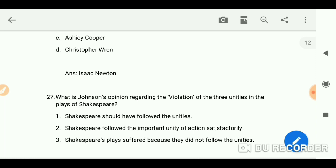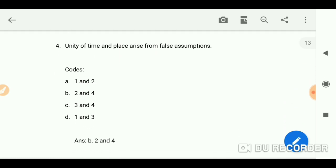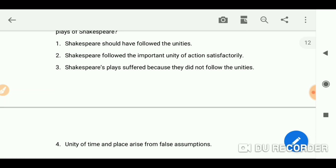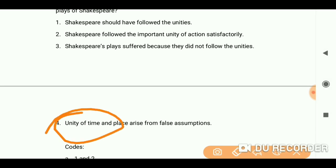What is Johnson's opinion regarding the violation of the three unities in the plays of Shakespeare? Here you have two and four: Shakespeare followed the important unity of action satisfactorily, and unity of time and place arise from false assumption. We know that he did not take care of unity of time and place, okay. The famous example is in his work where he mentioned the clock in Julius Caesar.